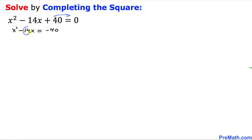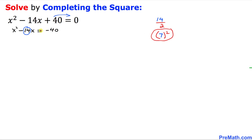We take only the 14 and divide it by 2, which gives us 7. Then we square this number to get 7 squared, which equals 49. This is the number we are going to add to both sides of the equation.